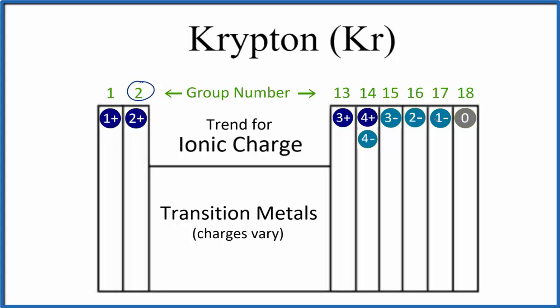13, 3 plus, and so on. When we get over to group 18, krypton is in group 18, we can see that the ionic charge is going to be 0.